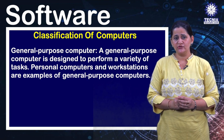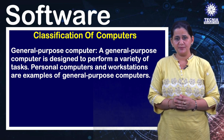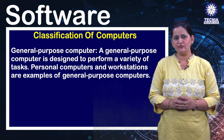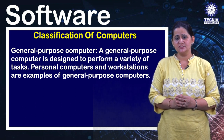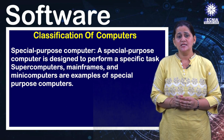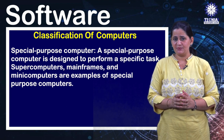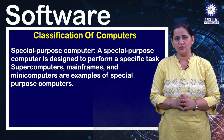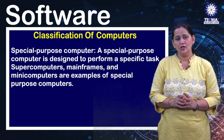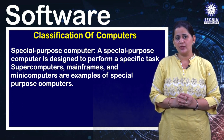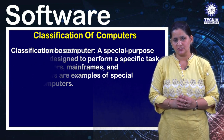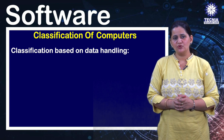The next classification is based on purpose. A general purpose computer is designed to perform a variety of tasks; personal computers and workstations are examples. A special purpose computer is designed to perform a specific task; supercomputers, mainframes, and mini computers are examples of special purpose computers.